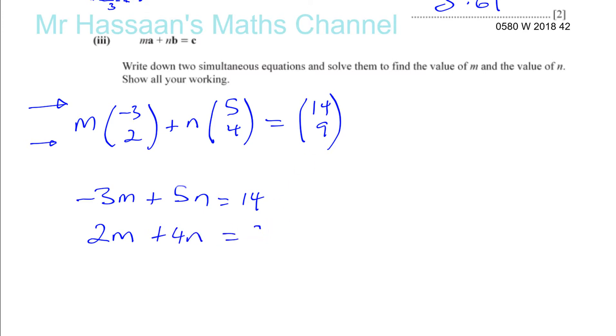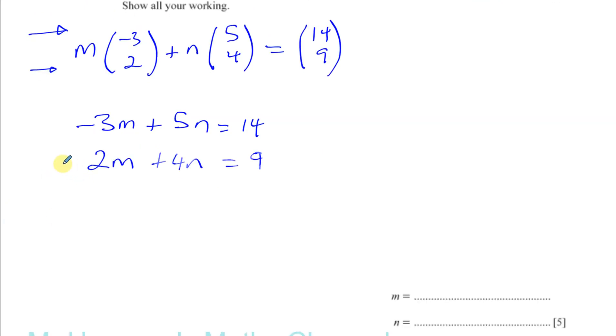So we have a pair of simultaneous equations which we can solve. So if I multiply this by 3 to make the m's the same, and multiply this by 2 to make the m's basically the same here. They'll both become 6. So I'll have minus 6m, remember to multiply everything by 2, plus 10n equals 28. And then I'm going to have 6m plus, I'm multiplying by 3. 4 times 3 is 12n. 3 times 2 is 6, 3 times 4 is 12, 3 times 9 is 27.